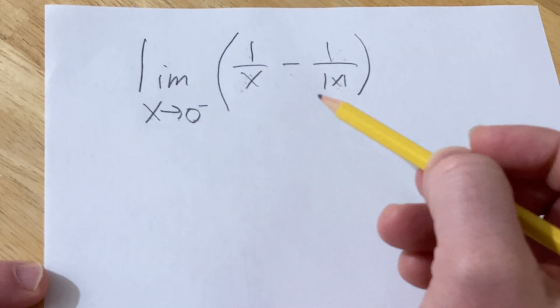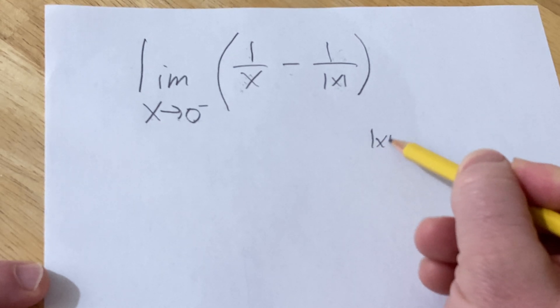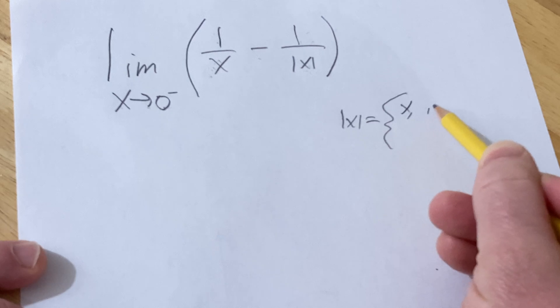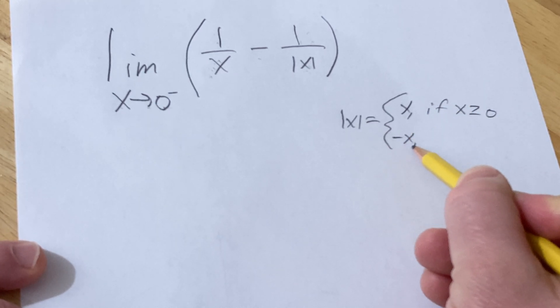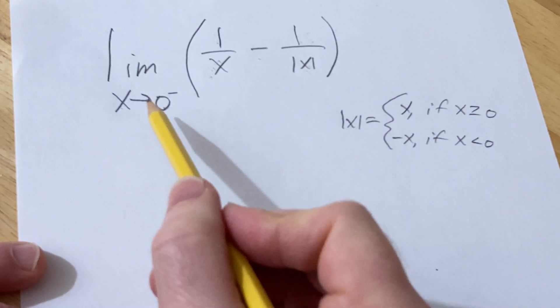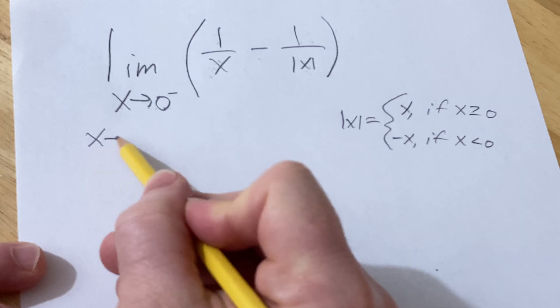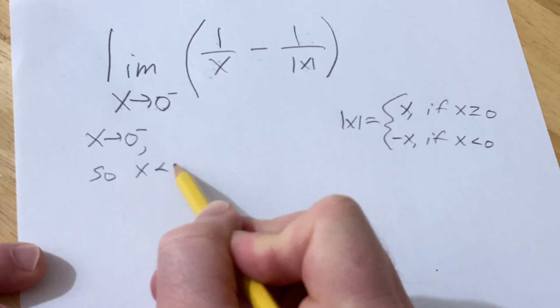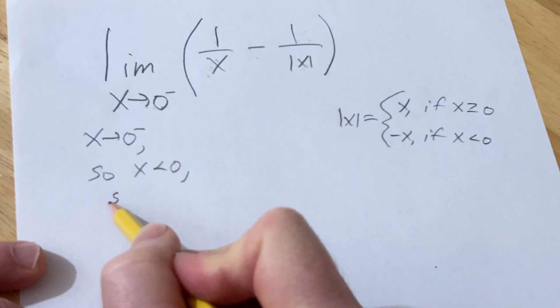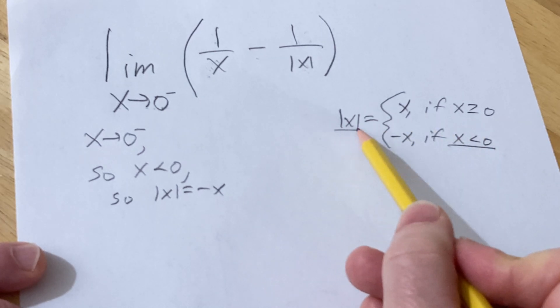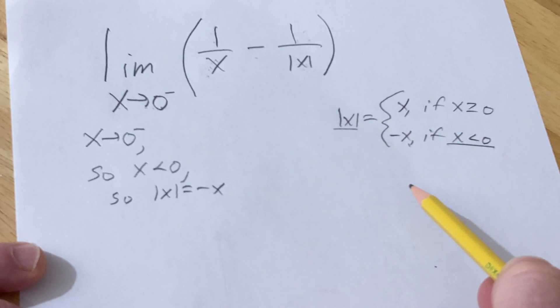So the absolute value of x is a piecewise function. It's equal to x if x is greater than or equal to 0, and it's equal to minus x if x is less than 0. So in our particular problem x is approaching 0 from the left, so that means that x is less than 0, so that means that the absolute value of x is equal to negative x. Because if x is less than 0 the absolute value of x is equal to negative x.